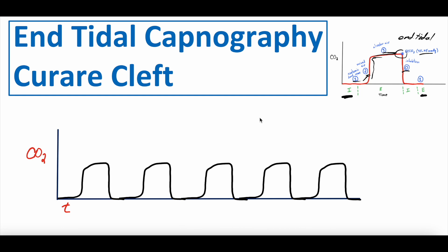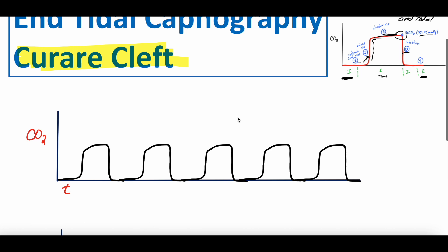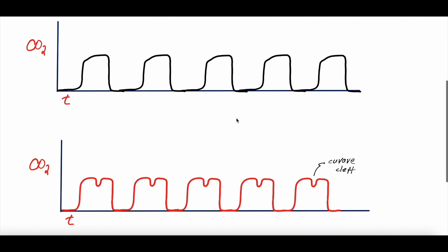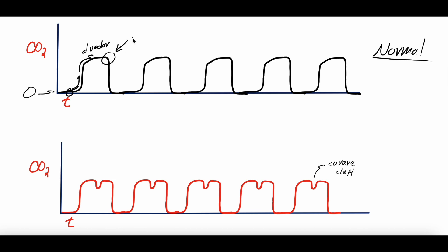We're talking about capnographic waveforms, particularly one called the Curare Cleft. This is one you see in practice questions and on exams, and it is clinically relevant, particularly in certain specialties. Here are two capnographic waveforms. The one on top is normal — you start to exhale, you get dead space where CO2 is still at zero, then mixed air, then plateau at alveolar air, reaching this peak which is the actual end-tidal value.